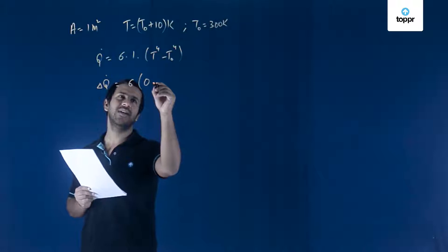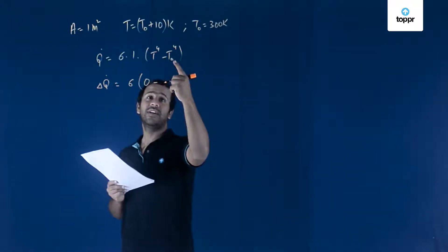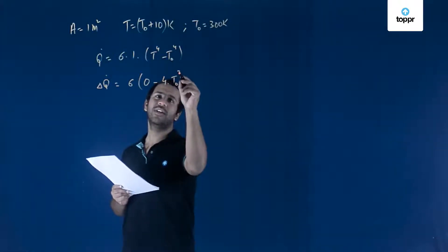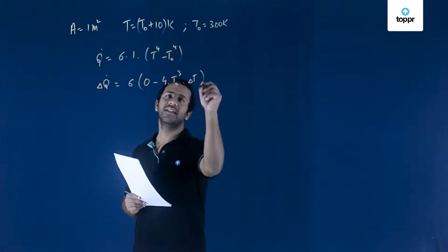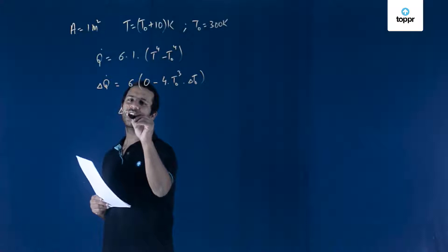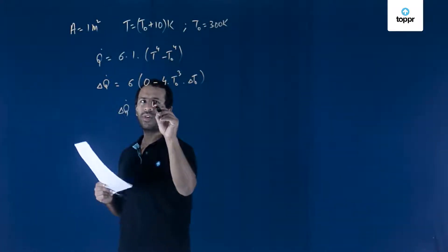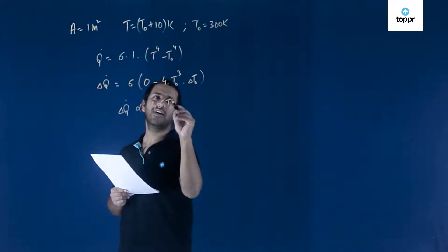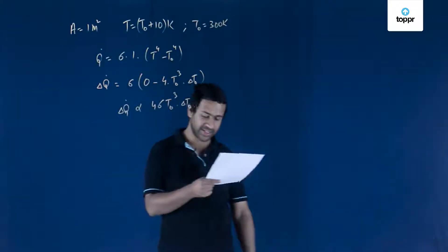the change in it will be 0 minus the change in the temperature. You can differentiate that to get 4 into T0 cube into delta T. Let's call it delta T0. So you can see that the change in this heat radiated is proportional to 4 times sigma into T0 cube into delta T0. So option A is correct.